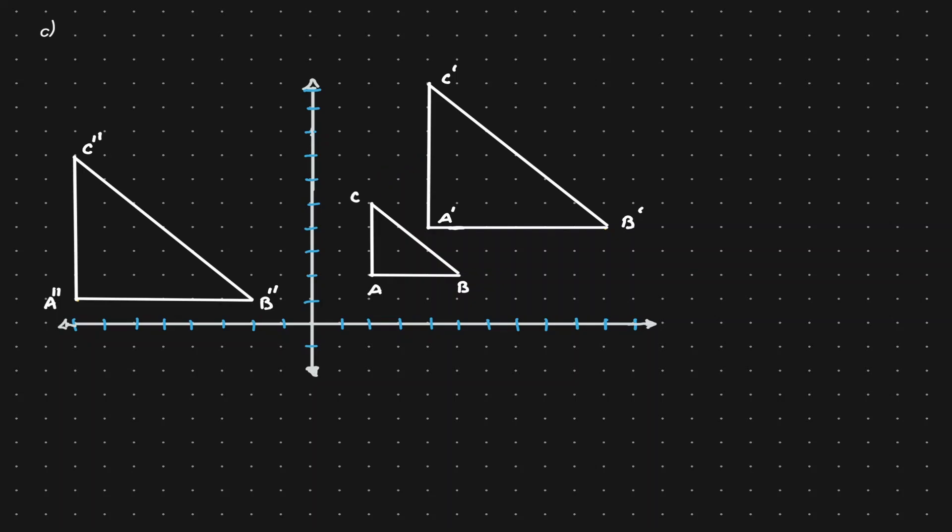And we can have some observations. Notice that A prime B prime C prime is definitely bigger than triangle ABC. And there is only one transformation that can make that happen, and that is a dilation.